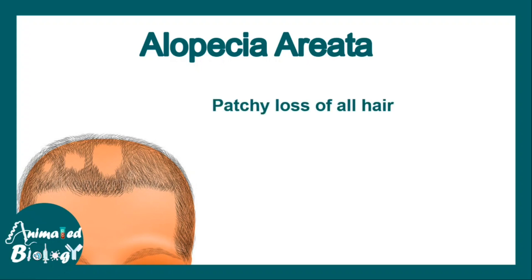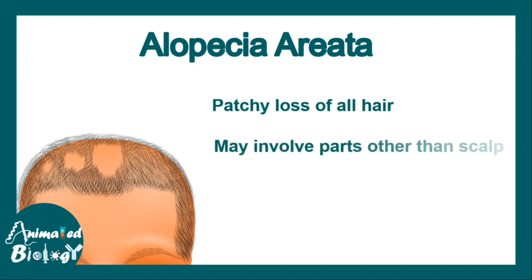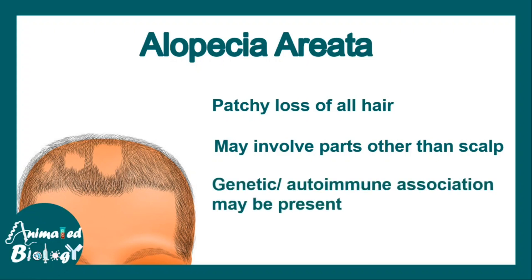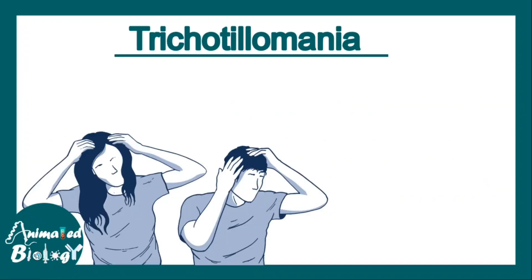Alopecia areata is a medical condition where there is patchy loss of hair. It may involve other parts apart from the scalp, like the beard region, eyebrows, armpits, chest, and groin. Genetic and autoimmune associations may be present but have not been fully proved yet.